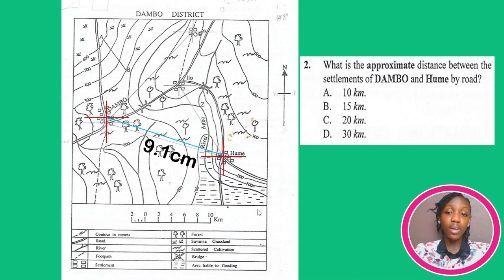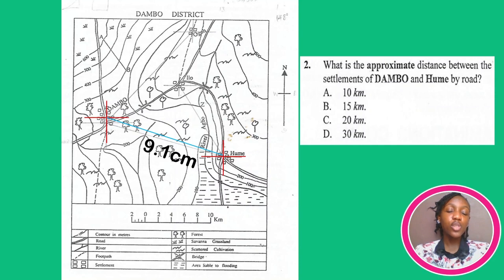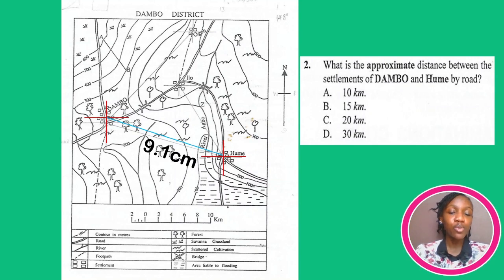But mind you, 9.1 centimeters is not the final answer. Please don't make this mistake and fall into the trap set by the examiners. In the process of rushing in the exam, you measure, get 9.1 centimeters, approximate it to 10, and pick A — completely ignoring that the two units are different: centimeters and kilometers. What we've measured is the map distance, but the question is asking for the actual ground distance. We use the map scale to give us an approximate of what the actual distance is on the ground.